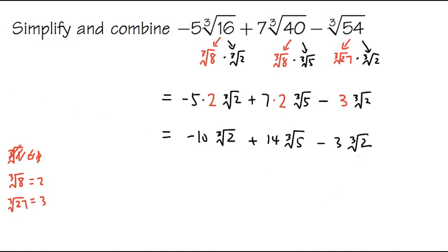Is there anything else that we can do? Yes, because this and this both have the cube root of 2. We can look at the number in front. Here we have negative 10, and here we have minus 3. We can combine these terms.